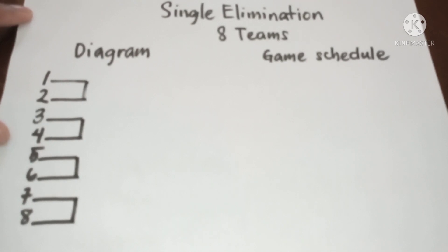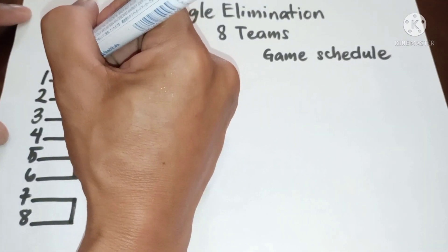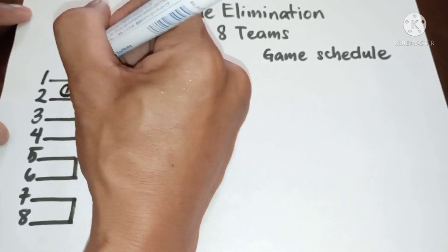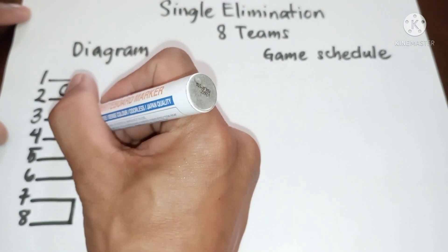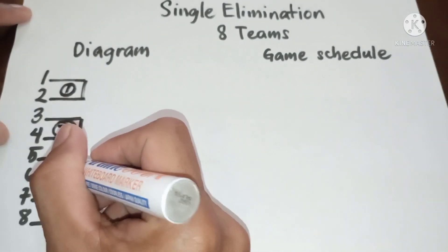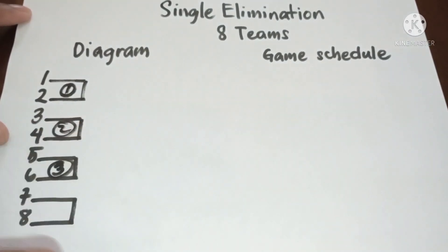And then let us have the game numbers from the top again. Game one, game two, game three, game four.